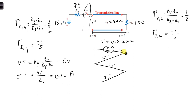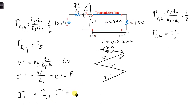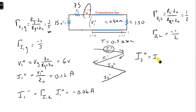To get I1 minus, I1 plus is incident on the load in order to create I1 minus. So I1 minus equals the current reflection coefficient at the load times I1 plus — the wave incident on the load — giving us minus 0.06 amps. For I2 plus, I1 minus is incident on the generator side, so I2 plus equals the current reflection coefficient at the generator times I1 minus, and we get 0.012 amps.